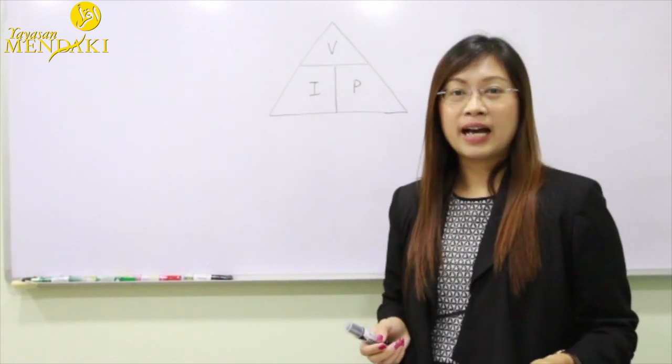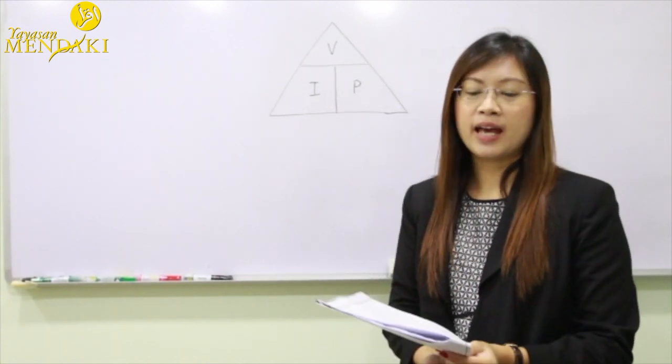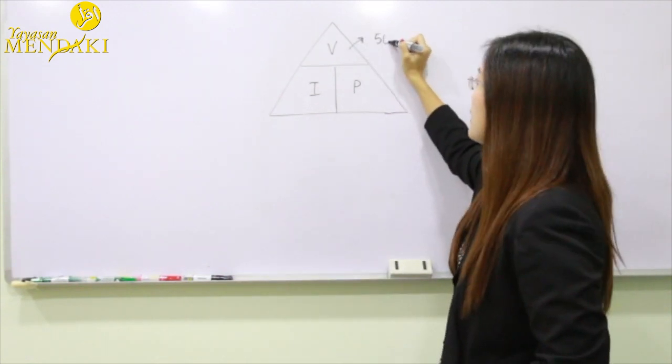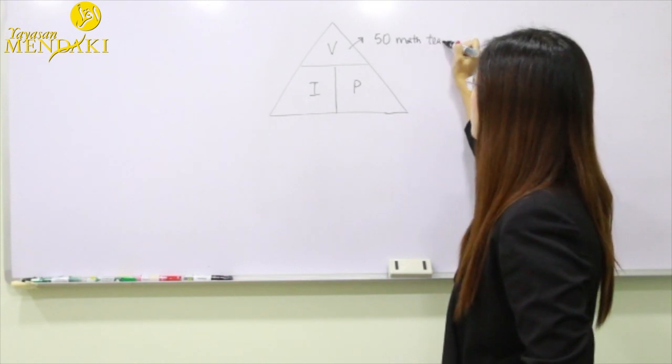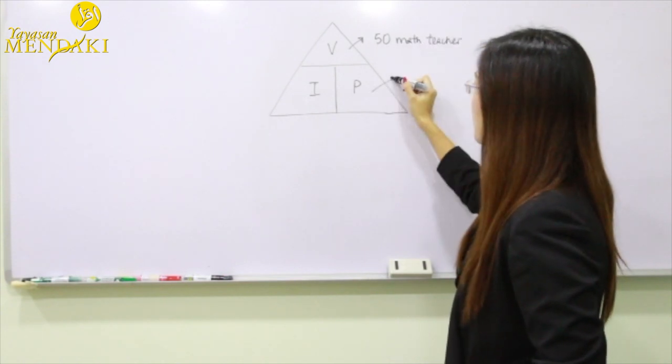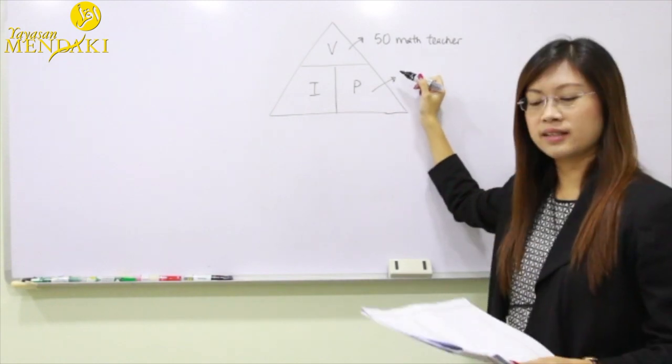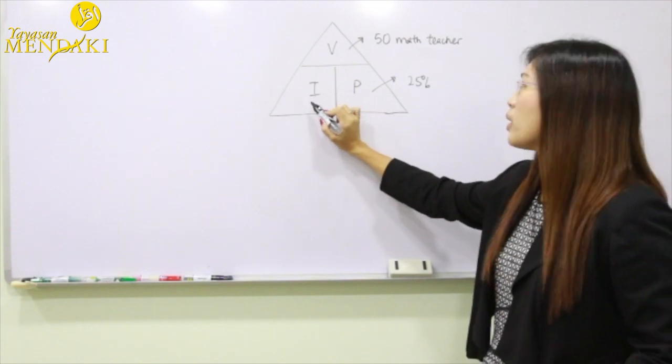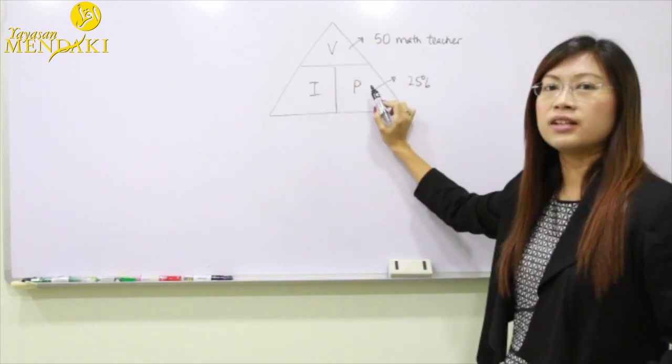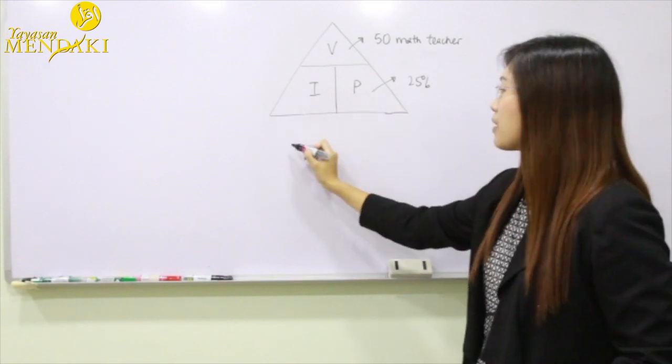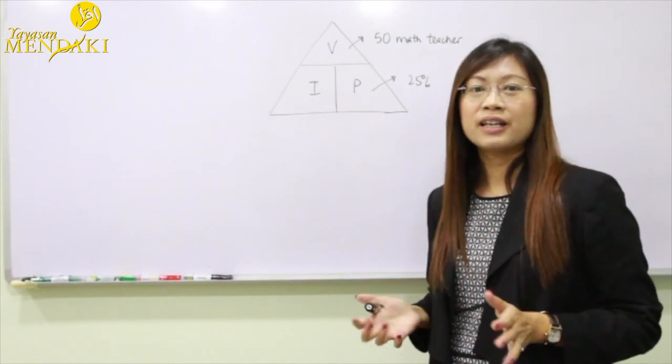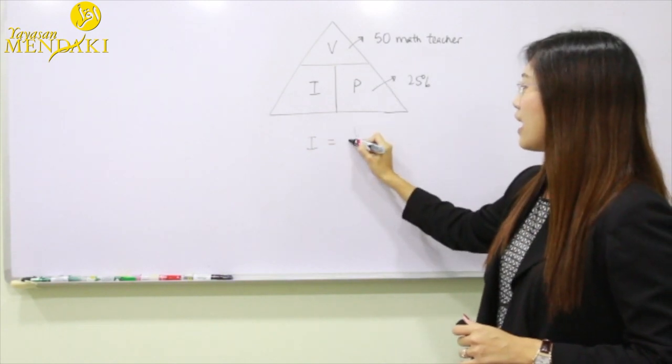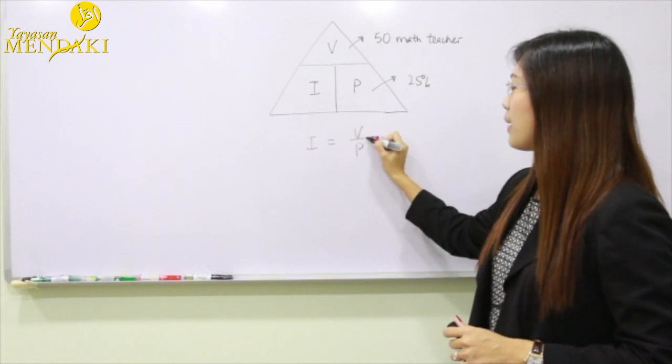Now in order to apply the VIP formula, we have V to represent the 50 math teachers and P to represent the 25%. So to find the initial, we're going to take the value and divide by the percentage. You can see that I is equivalent to V divided by P.